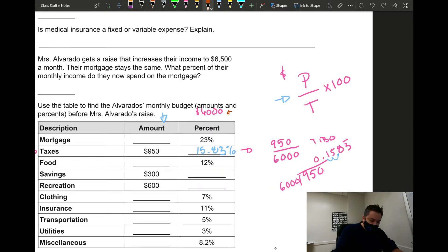12.23 and multiply by the total which in this case is $6,000. When you multiply $6,000 times 0.23 you get $1,380.